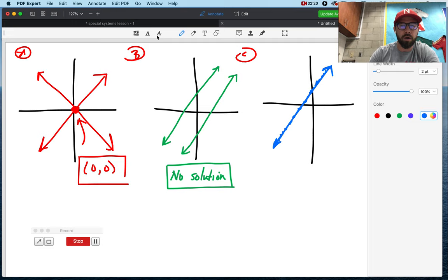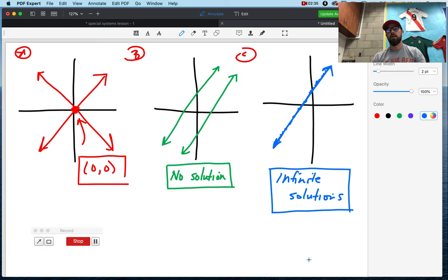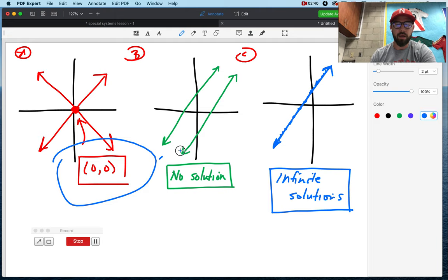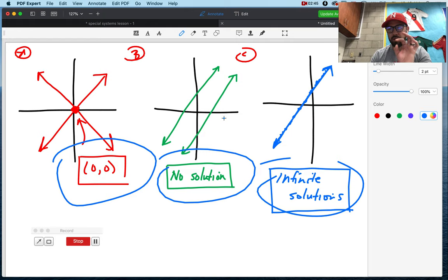And what that means is, those two points are intersecting at all these points. They're intersecting everywhere. They're going to be intersecting for eternity. So you would have, I think, on your homework, it's called, in that sense, infinite number of solutions. You can just say, infinite solutions.